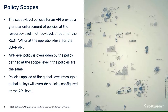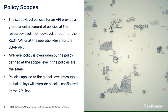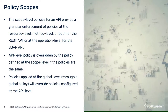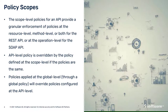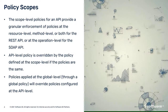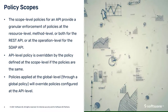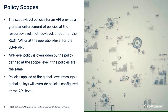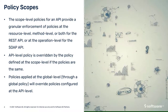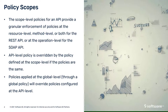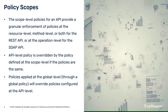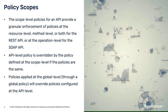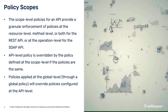Next is policy scopes. Scope-level policies for an API provide granular enforcement of policies at the resource level, method level, or both for a REST API, or at the operation level for a SOAP API. An API-level policy is overridden by the policy defined at the scope level if the policies are the same. Policies applied at the global level through a global policy will override policies configured at the API level.